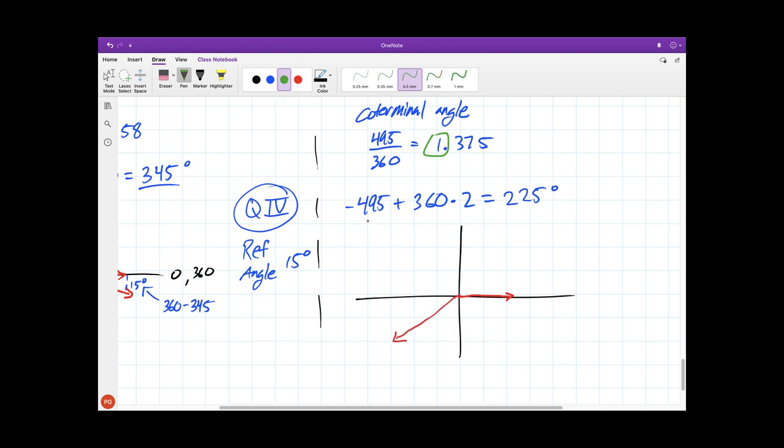Now drawing negative 495, we're not just going straight from here in the negative direction, we're not going in the positive direction. Negative 495 would be one full turn in this direction, that's negative 360, negative 450, negative 495.